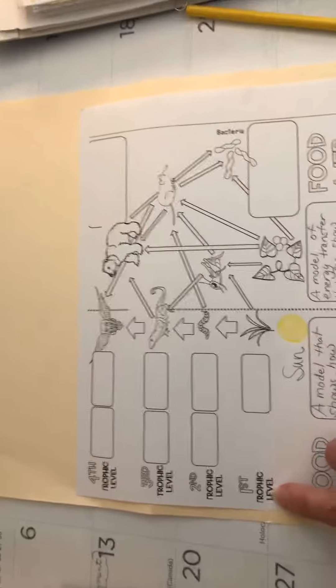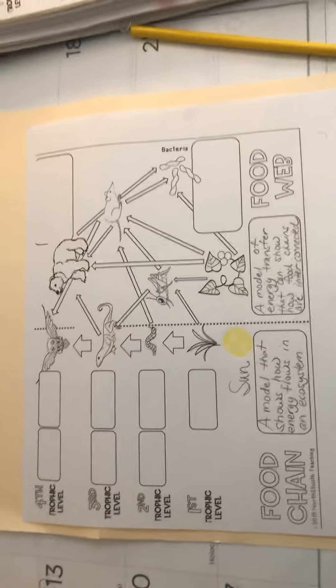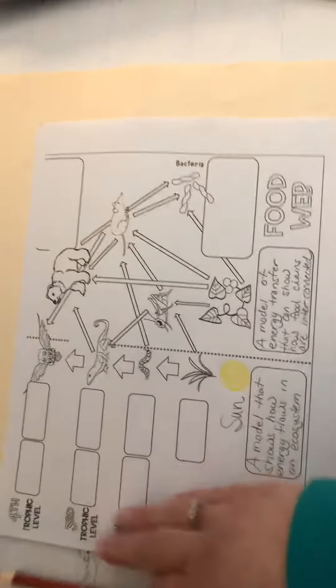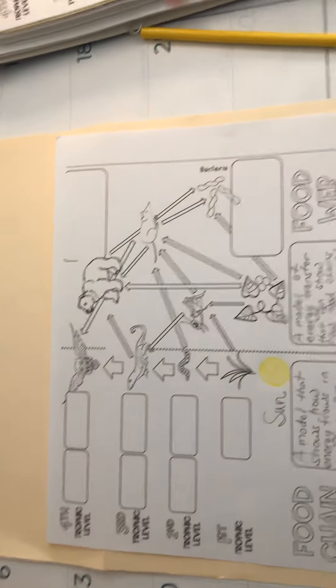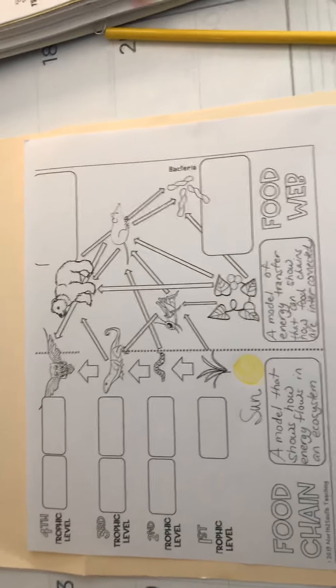they're doing is showing you trophic levels, which are basically energy levels. We're going to start by talking about the first energy level, the primary energy level, and those are producers. In this first box here we're going to write primary